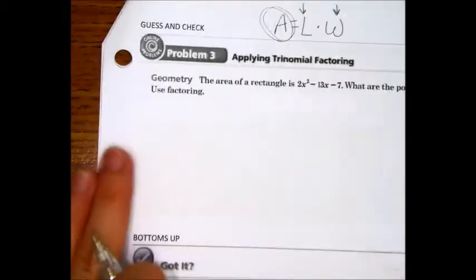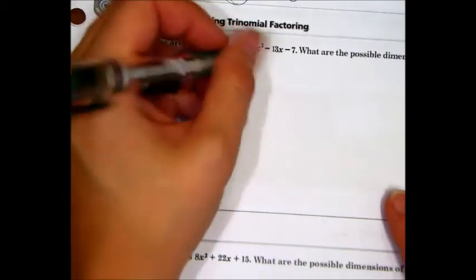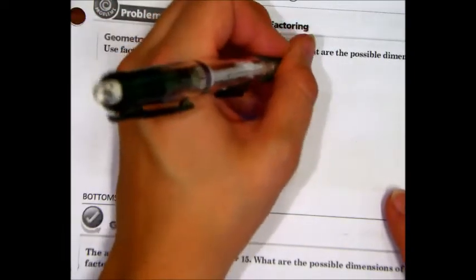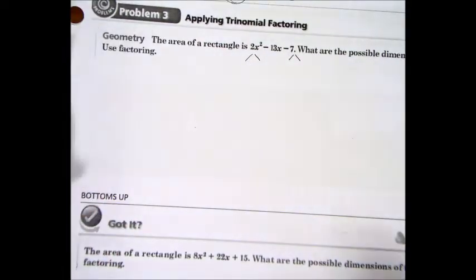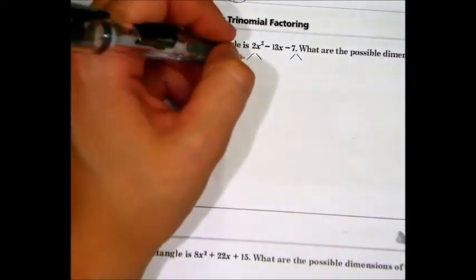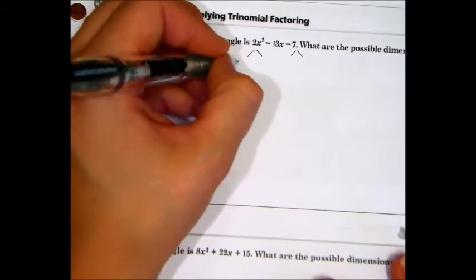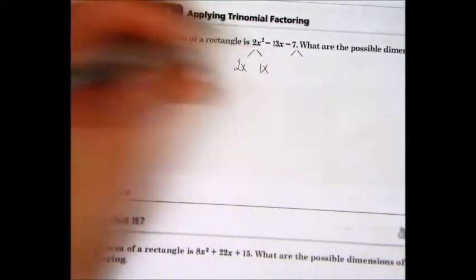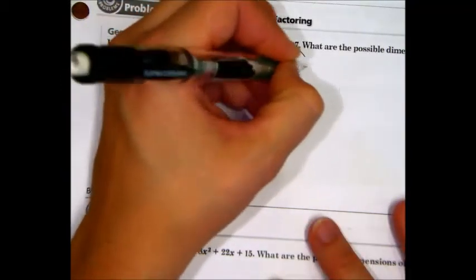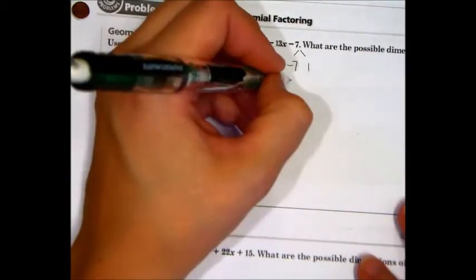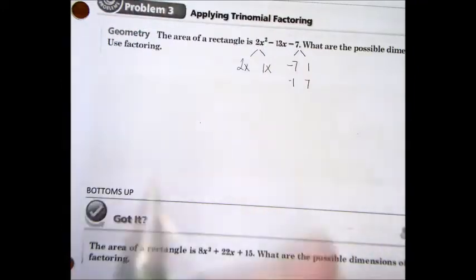Let's try guess and check. So, here's my 2x. Guess and check starts by breaking things down like this. What goes into 2x squared? What are the two things that go into 2x squared? 2x and 1x. That's right. And what are the things that go into 7? Or I should say negative 7. Negative 7 and 1. Or it could be negative 1 and 7.